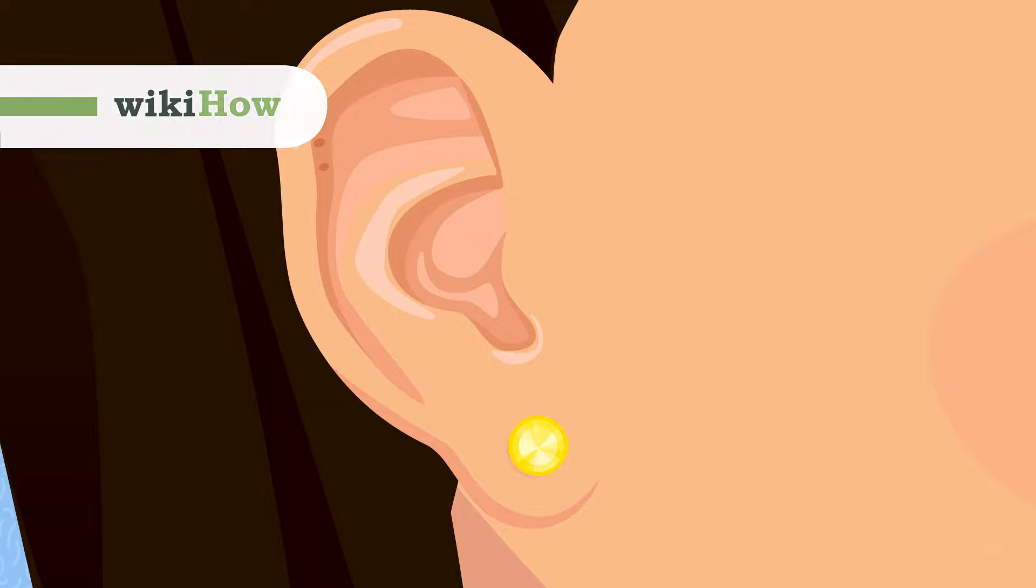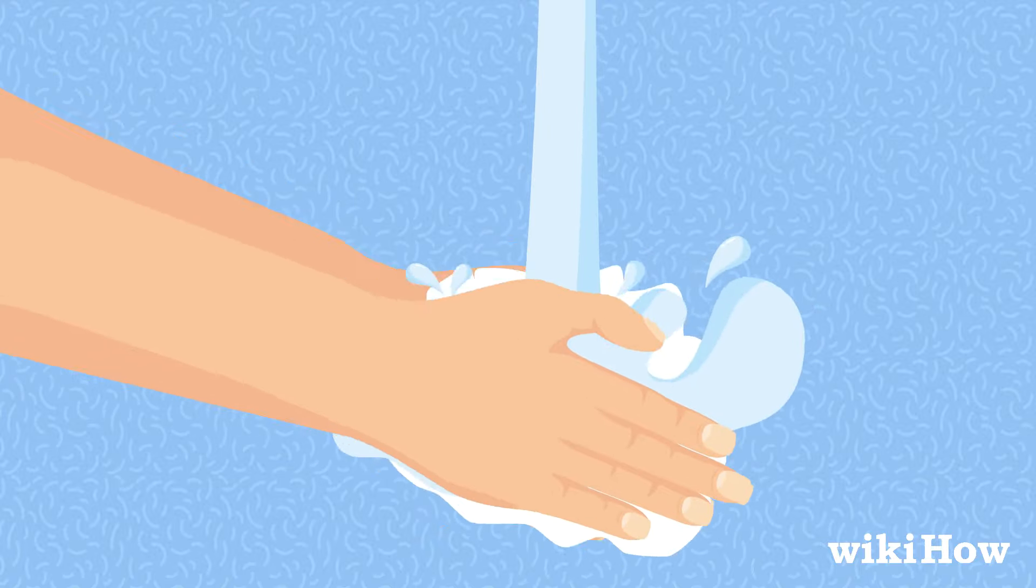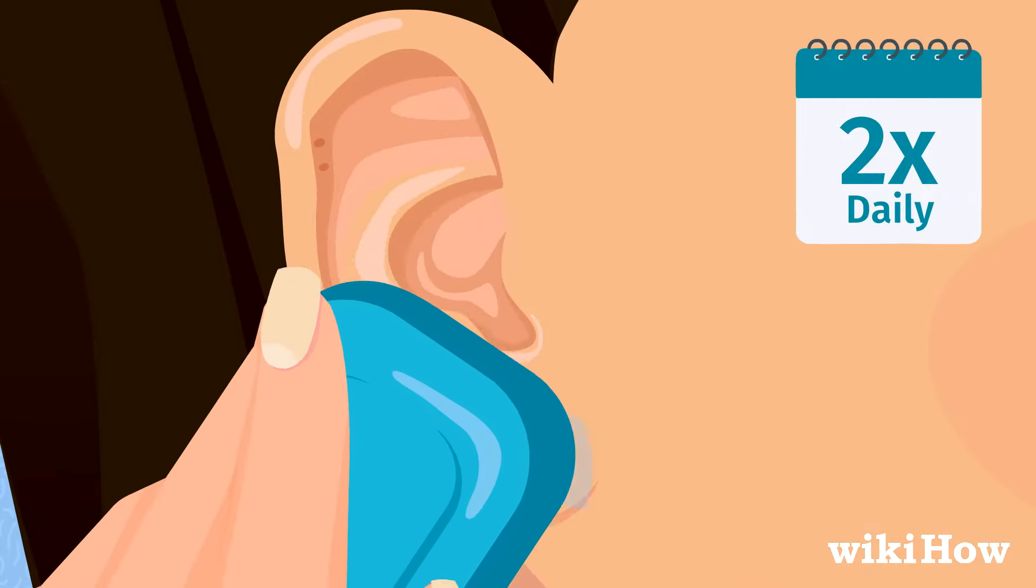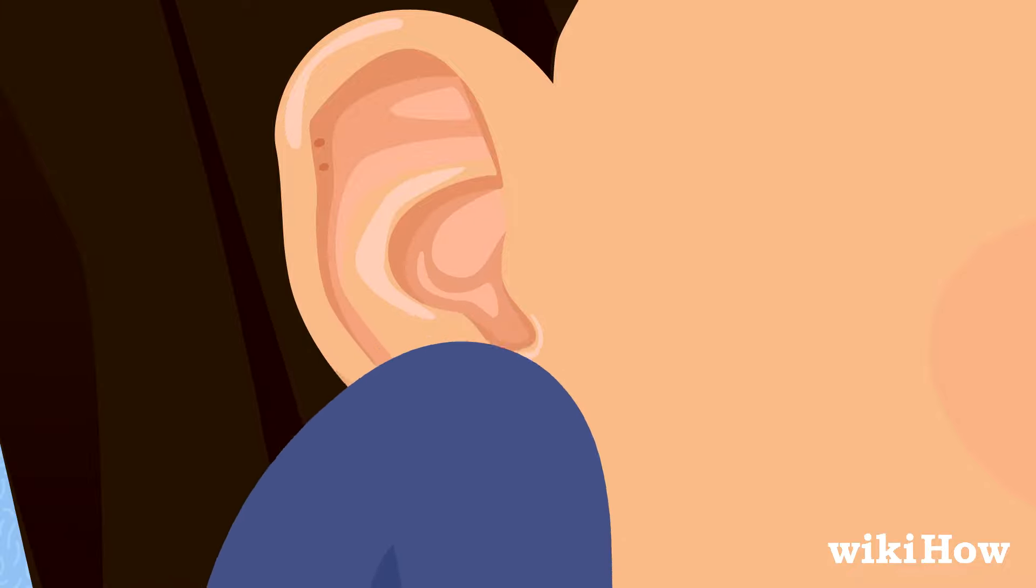To properly care for newly pierced ears, wash your hands with soap and water before handling your piercings. Wash the piercings twice a day with water and mild soap, then wipe the soap away with a clean, damp cloth.